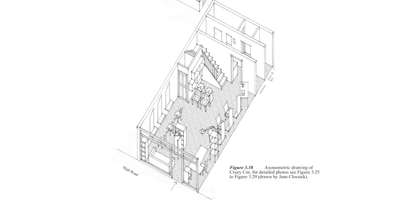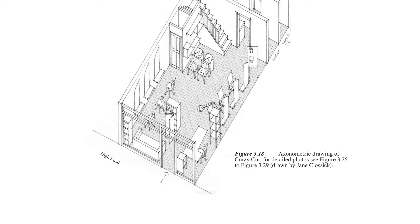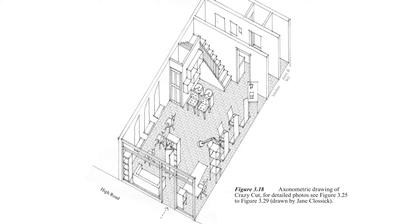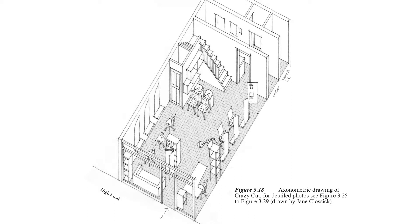Here's an axonometric drawing of Crazy Cut. At the front is the door, connecting the interior to the street — anyone can walk straight in off the street, making this the most public part of the salon. In the central area you can see the hairdressing chairs and the products they sell, plus the hairdressing sinks. This central area is less public than the very front and is guarded by the receptionist, who would prevent anyone without an appointment from entering.